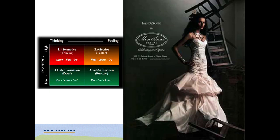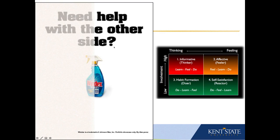This ad is for a bridal store and dress — a designer creating for a specific chain of stores. Where would something like a bridal dress fall on the FCB grid? We have thinking and feeling, low and high involvement. Well, this one would be radically high involvement feeling. There is absolutely nothing rational about the purchase of a wedding dress. I love this ad — it's one of my all-time favorites because of its simplicity and the way it communicates with almost no words at all, relying entirely on the image.